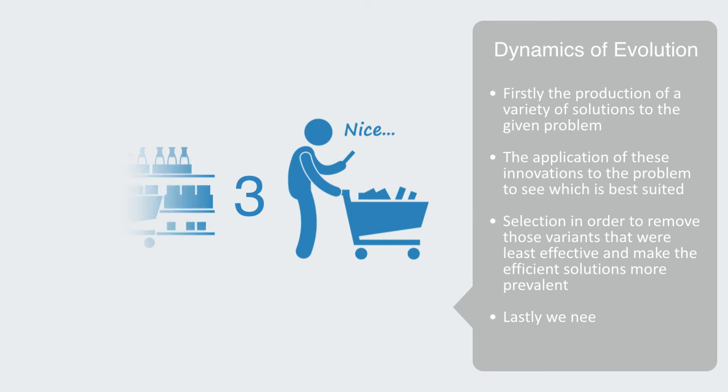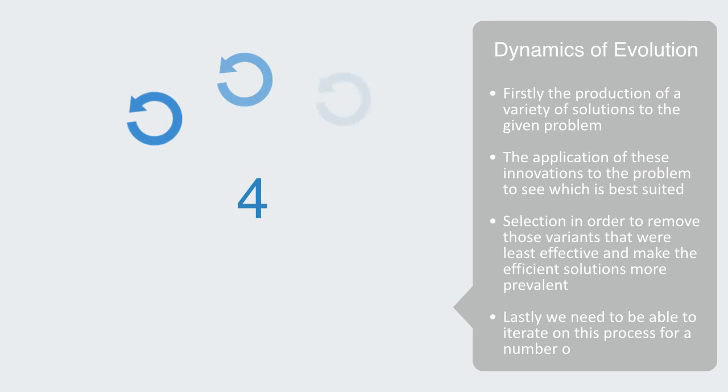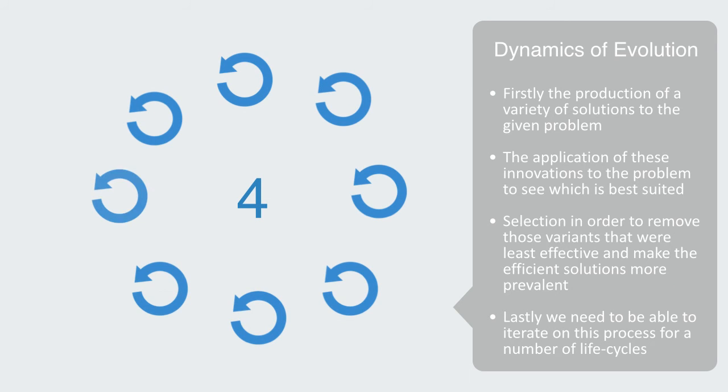Lastly, we need to be able to iterate on this process for a number of life cycles. Each iteration of the process should change the location of individual technologies on the landscape.